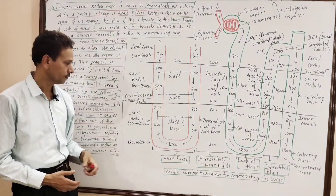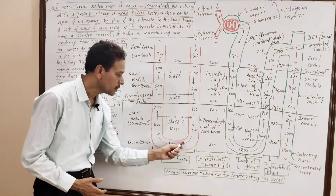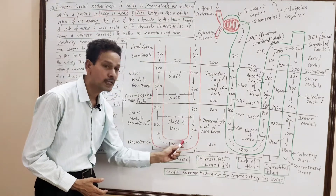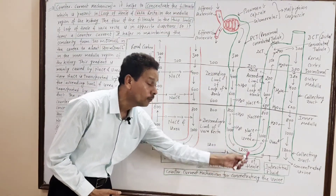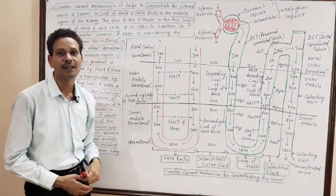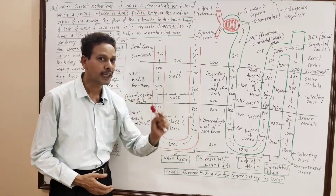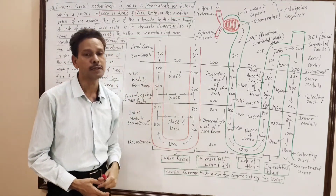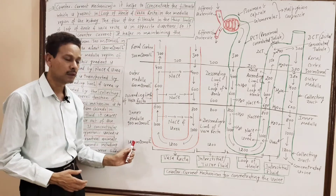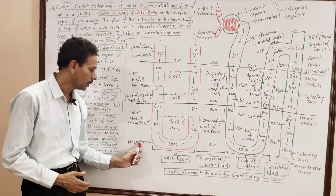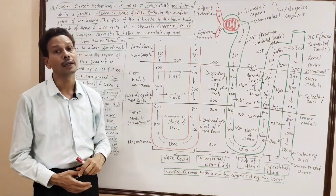In the inner medulla — both in the vasa recta and in the terminal part of the loop of Henle — the concentration of filtrate is maximum, that is 1200 milliosmol per liter.